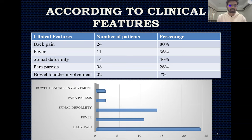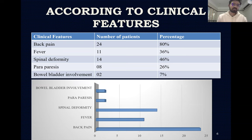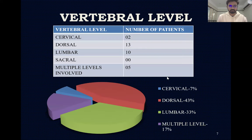According to clinical features, patients were classified on the basis of presenting symptoms. The most common clinical feature was back pain, seen in around 80% of patients. The second most common was spinal deformity at 46%, third was fever at 36%, and fourth was paraparesis and lower bladder involvement.